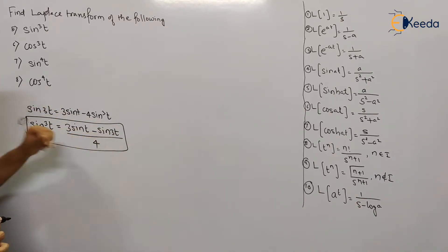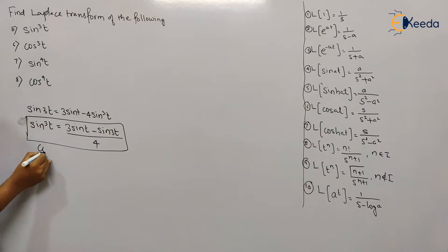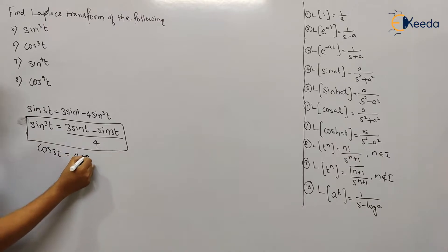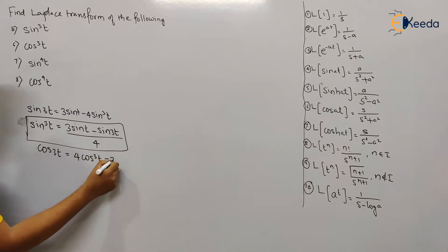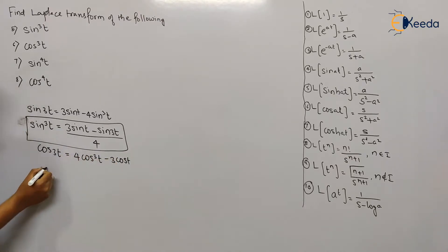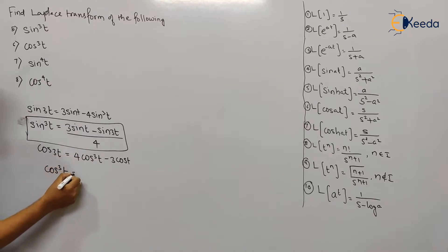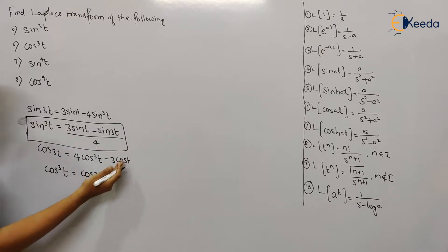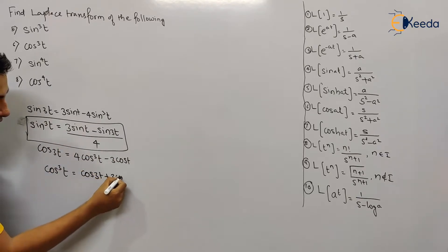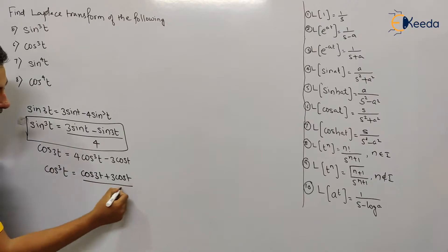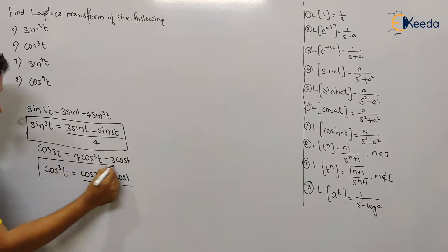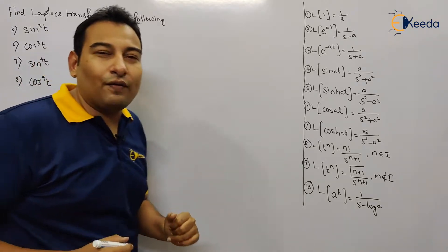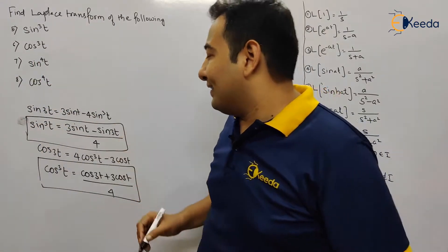Next, for cosine: the formula is cos 3t equals 4 cos³t minus 3 cos t. From this formula, cos³t equals cos 3t plus 3 cos t, all divided by 4. These are the two formulas we're going to use for solving problems number five and six.